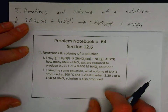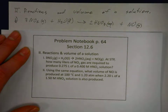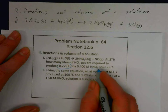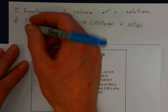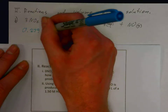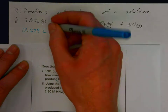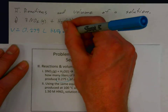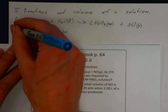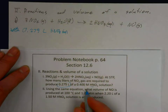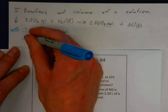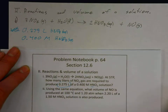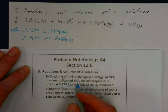Let's write down the given values. We have 0.275 liters of the nitric acid solution — that's the volume. We also have the molarity of that solution: 0.4 molar HNO₃. Our unknown is the volume of NO₂ gas, which is a gas, not an aqueous solution.